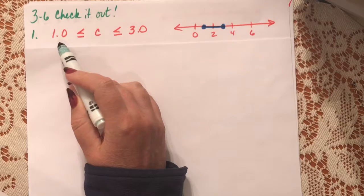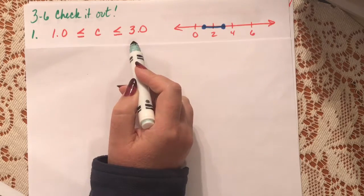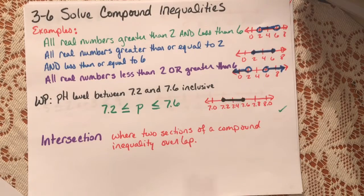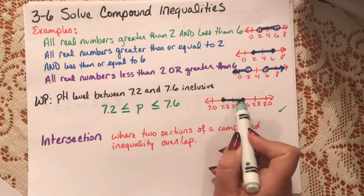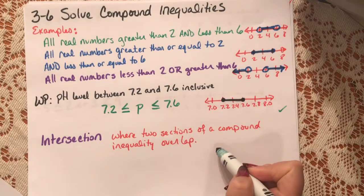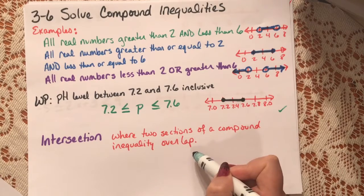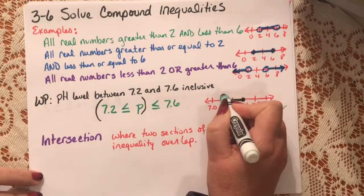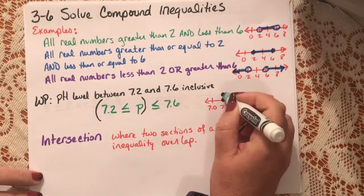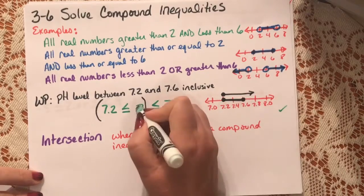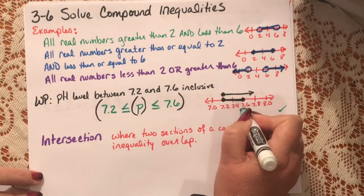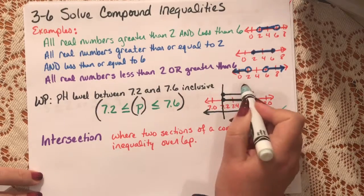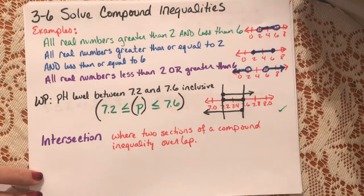For checkpoint one, they asked for chlorine levels to be between 1.0 and 3.0 inclusive, so that equation and graph look like this. When you combine two inequalities like this, it's called an intersection — where two sections of a compound inequality overlap. We're looking at the inequality greater than or equal to 7.2 and the inequality less than or equal to 7.6, and where they overlap is the intersection.